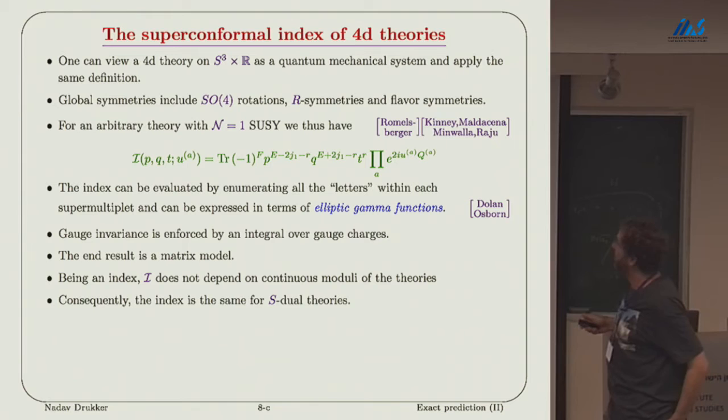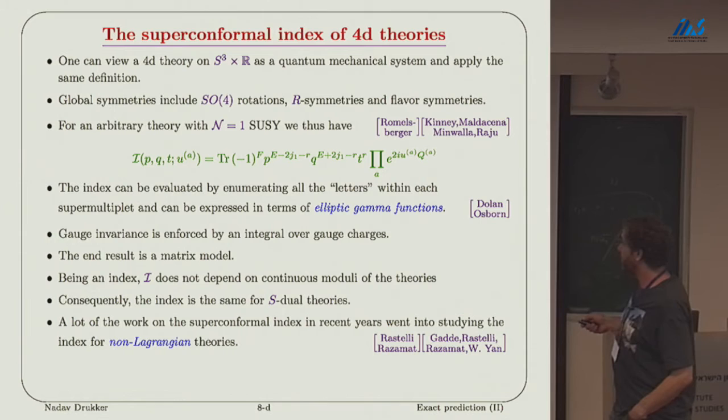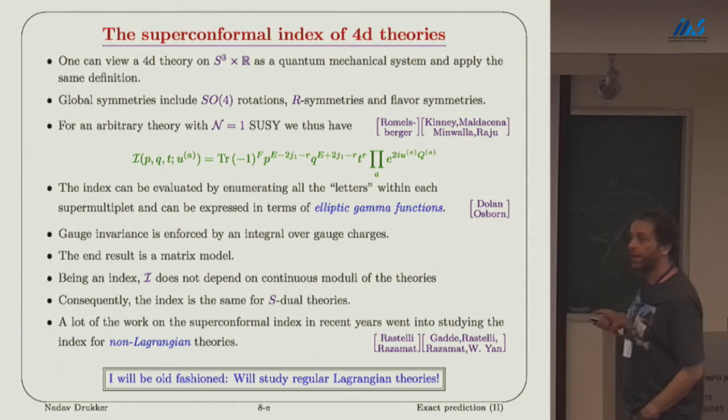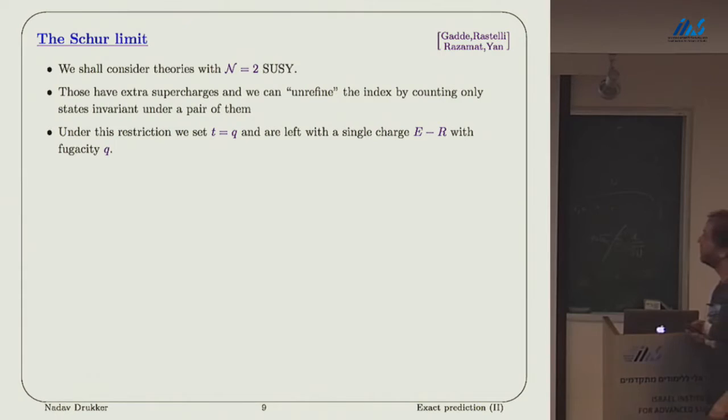If we have a class of theories classified by the rank N, then we have a dependence on N. The index is the same for S-dual theories, and the nice thing about that is this allowed to understand the index for theories that are not Lagrangian. This is some of the things Leonardo and Shlomo and their collaborators studied. But in this talk, I'll be very old-fashioned, and I will concentrate on Lagrangian theories, and in particular, on N equals 4 super Yang-Mills.